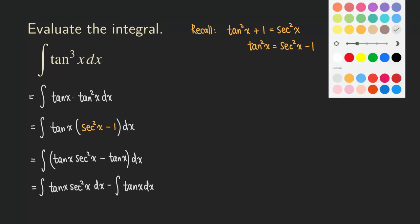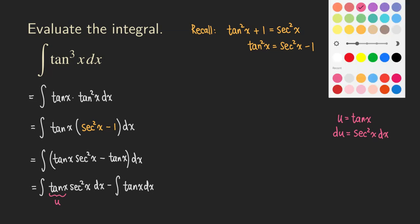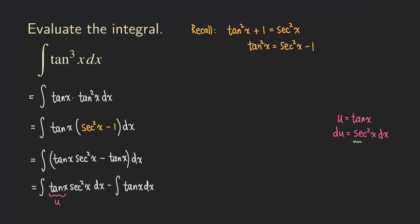We are going to perform a u-substitution. We are going to let u equal tangent x. The du is equal to secant squared of x, dx — that's the derivative of tangent. Do you see what's going on? This secant squared x dx is actually the same as our du.